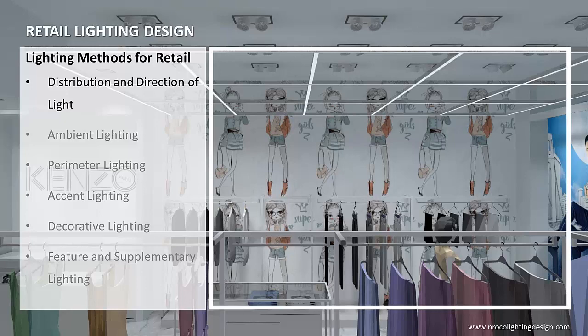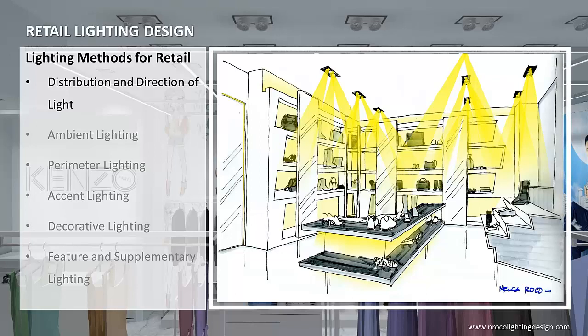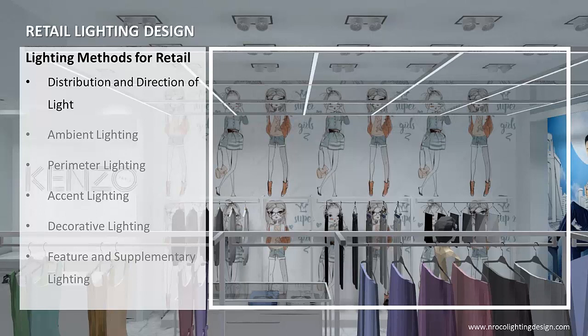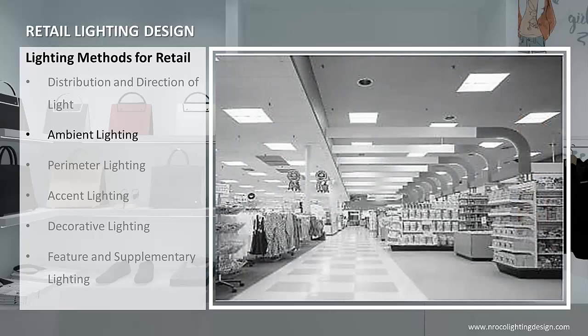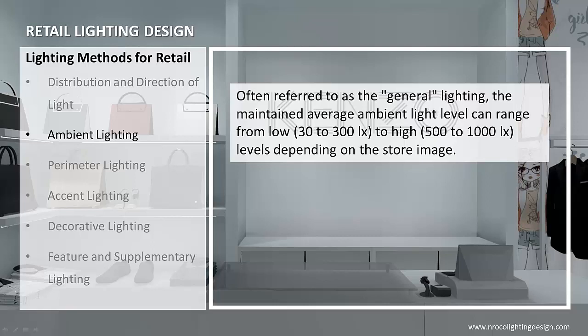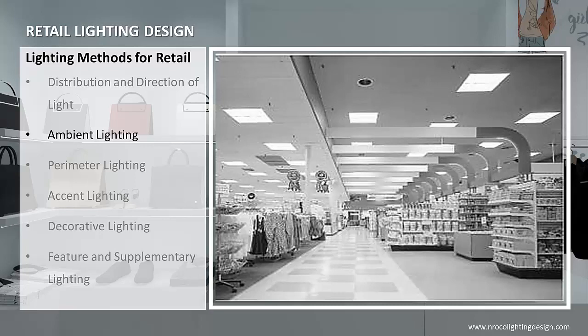In the initial phase of the lighting design process, the distribution of light must be defined. The luminous environment can range from uniform, diffuse light to very focused light with extreme contrast. The target market plays a significant role in defining distribution characteristics. The ambient lighting system in a retail environment should provide a general diffuse layer of uniform illuminance throughout the store, often referred to as general lighting. The maintained average ambient light level can range from low (30 to 300 lux) to high (500 to 1000 lux) depending on the store image.